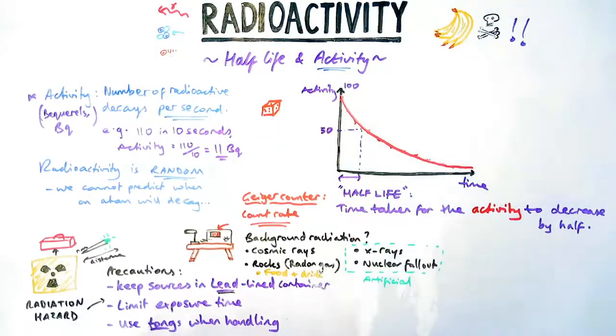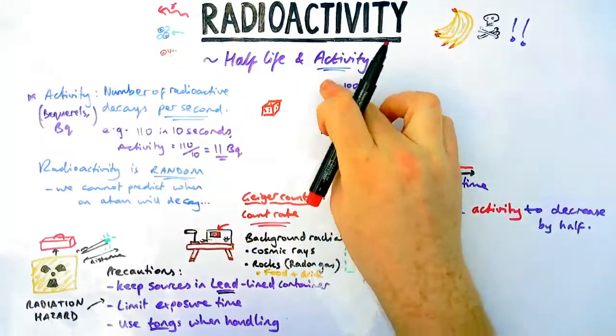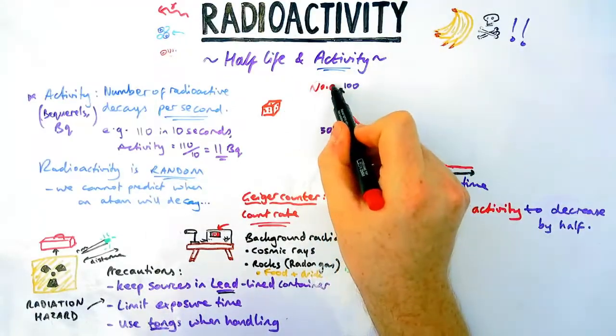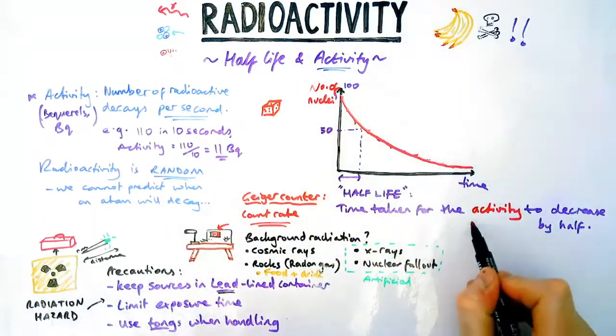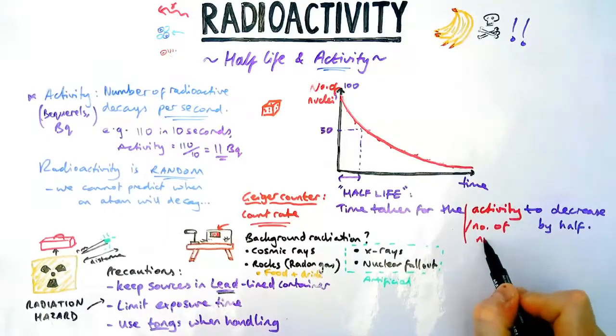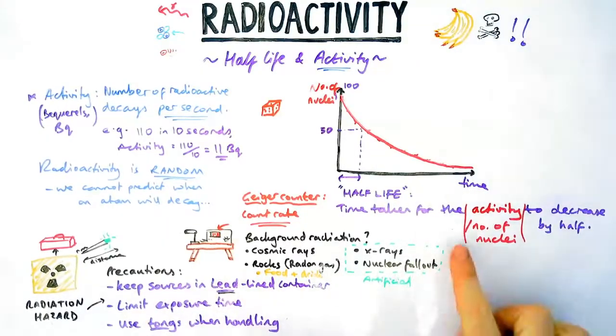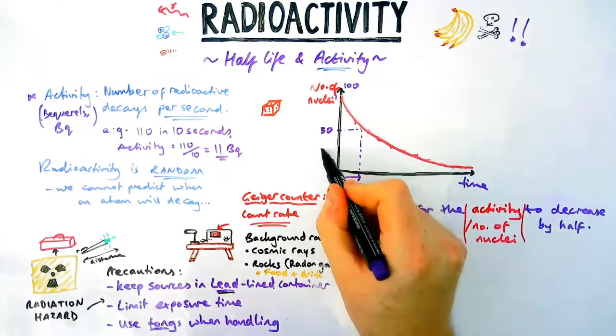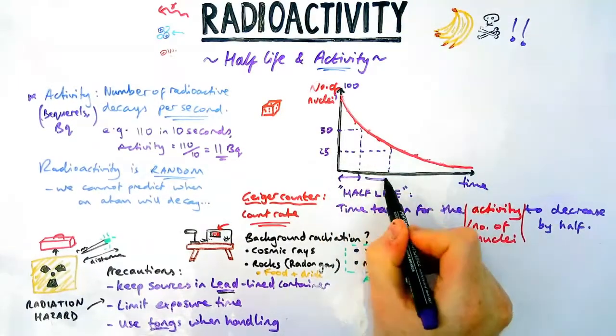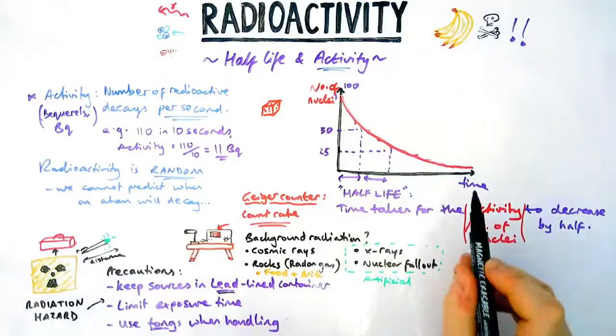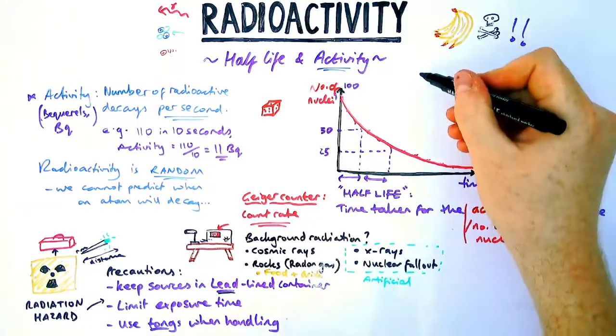Now this doesn't just have to be activity as we'll see in a second. This could also be the number of nuclei, because the more number of nuclei, the higher the activity. So another valid definition is to say the number of nuclei to decrease by half. Now it doesn't just mean from the initial to half of that. It could be from 100 to 50, it could be 50 to 25, it could be 60 to 30.